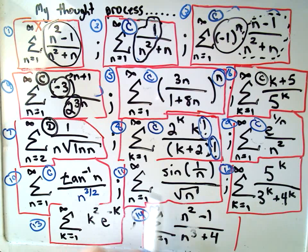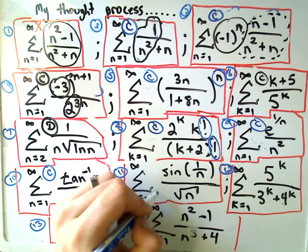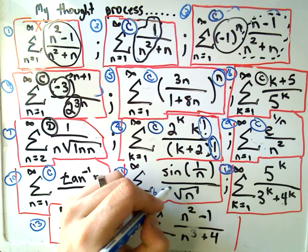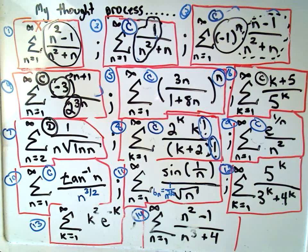I think number 11 is the trickiest one of all of them. The sine of 1 over n divided by square root of n. And I think you can use the direct comparison test with n to the 3 halves again. And, you know, how did I come up with n to the 3 halves? Well, I guess if I make solutions, I'll clue you into that. That's one of the tricky things.